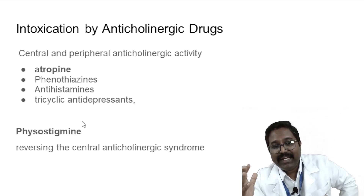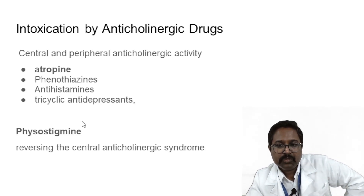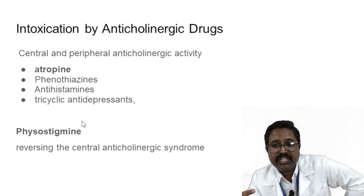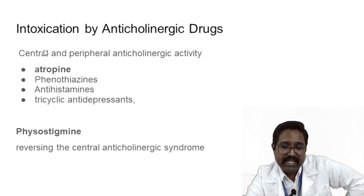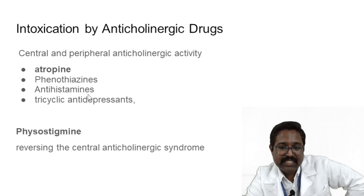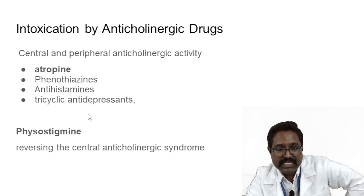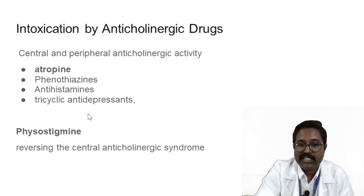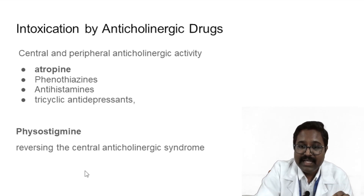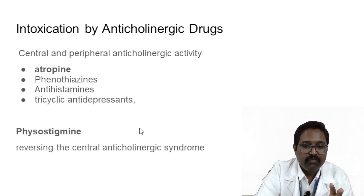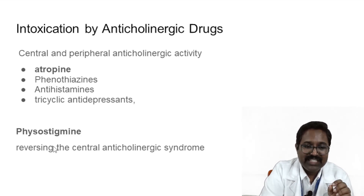How to treat intoxication by anticholinergic drugs? Anticholinergic drugs — whether centrally or peripherally acting, such as atropine, phenothiazines, antihistamines, or tricyclic antidepressants — all have anticholinergic activity. This toxicity can be overcome by giving physostigmine, which can reverse central anticholinergic syndrome. The drug of choice for atropine poisoning is physostigmine — a cholinesterase inhibitor.